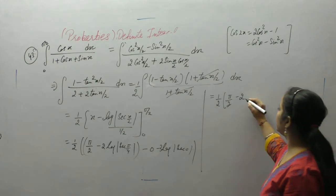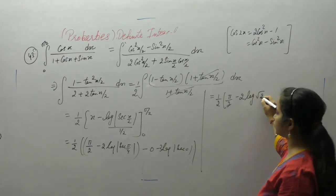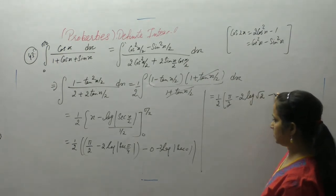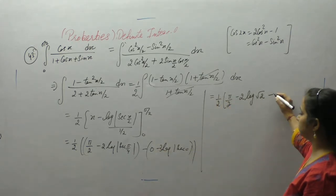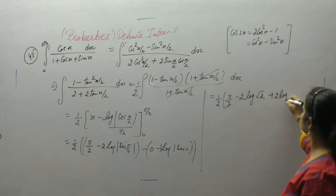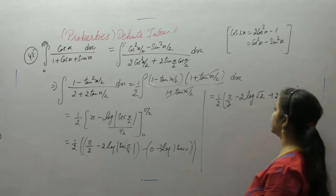So sec pi by 4 is root 2. Cos 0 is 1, and log 1 is 0.